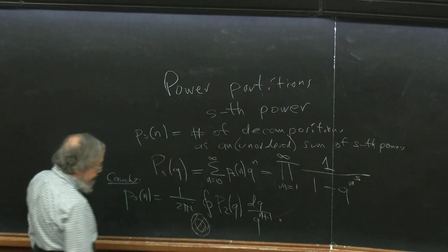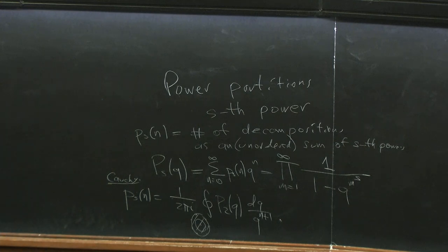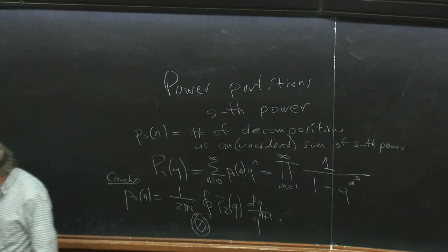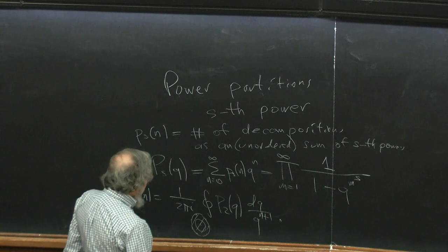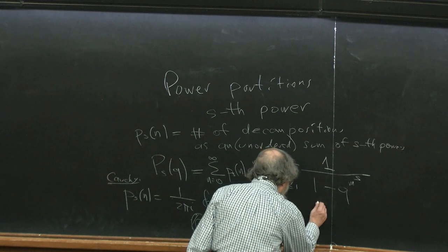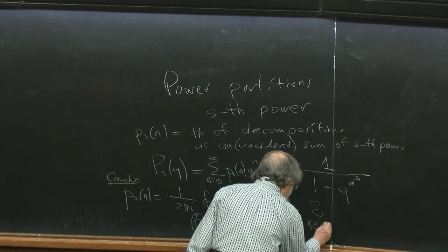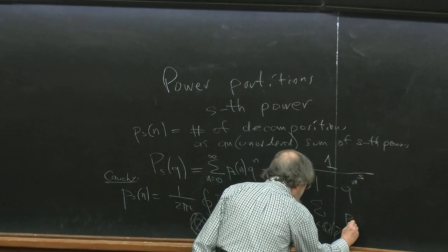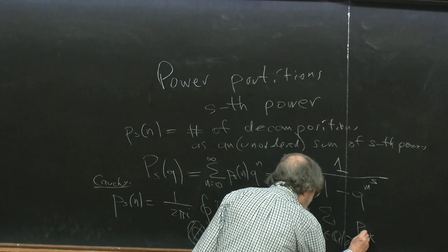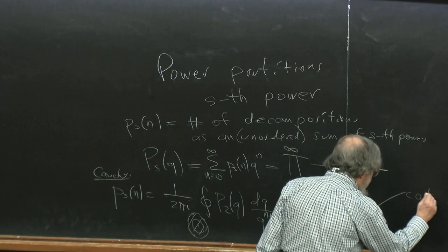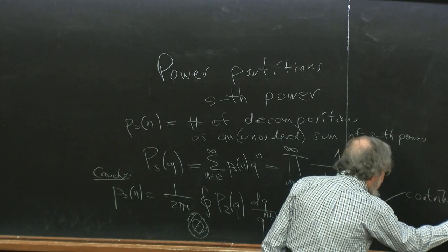The generating function has the expansion product over m of (1 - q^m)^(-s), which is what Euler found in the case s=1. By Cauchy's formula, p_s(n) equals 1/(2πi) times the integral over any path encircling 0 inside the unit disk — for instance the circle of radius r < 1 — of p_2(q) divided by q^(n+1). The circle method consists in looking at the singularities of p_2(q).